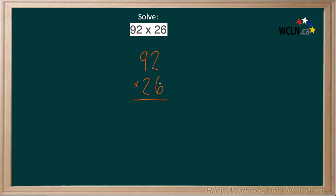So we have 6 times 2, which is 12, carry the 1. 6 times 9, which is 54, plus 1, 55.